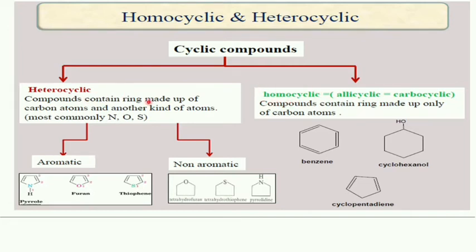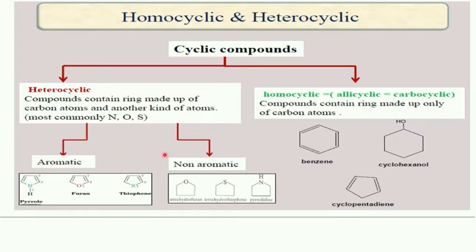You can see the variation between homocyclic and heterocyclic. The prefix 'hetero' indicates that any atom other than carbon is present — we consider that a heteroatom. So compounds containing a ring made up of carbon atoms and other kinds of atoms are heterocyclic. The most commonly observed heteroatoms are nitrogen, oxygen, and sulfur. Heterocyclic compounds may be aromatic or non-aromatic.